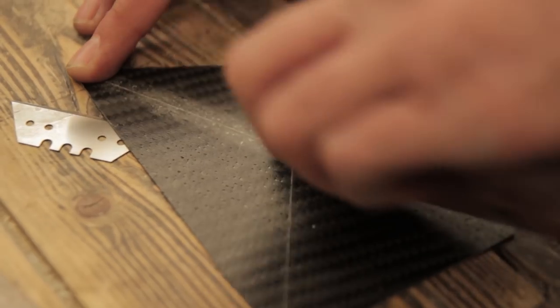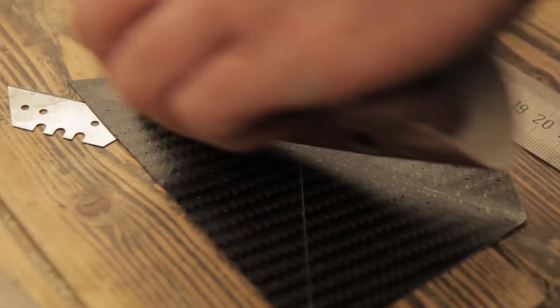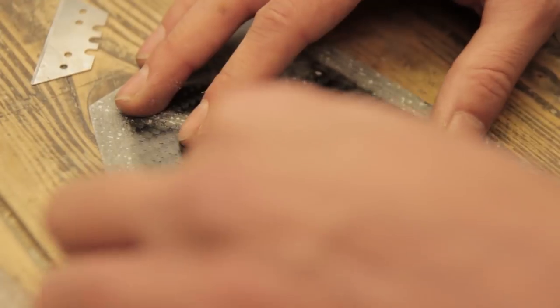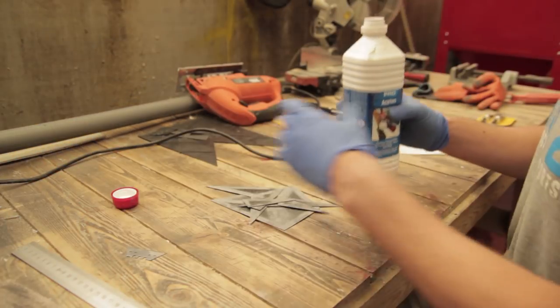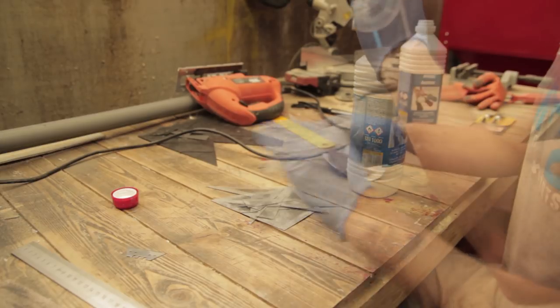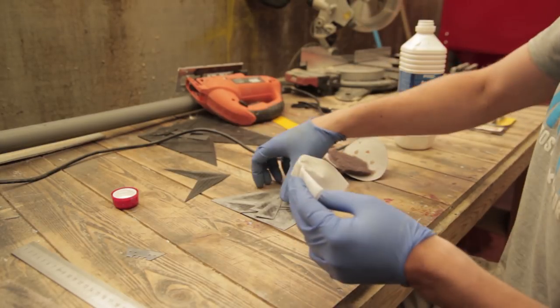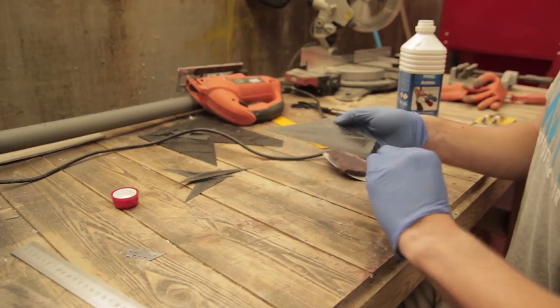So the reason I've used carbon fiber is because I just have it laying around in the workshop. It's quite stiff and it's pretty thin so you can be pretty accurate making parts using carbon fiber. But you could do it as well with other types of plastics and sheet metals and so on.